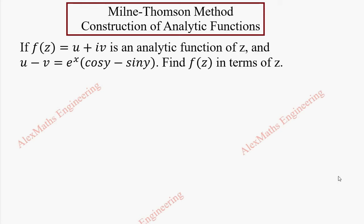Hi students, this is Alex here. In this problem we have given: if f of z is u plus i·v, which is an analytic function of z, and u minus v equals e^x times (cos y minus sin y). We have to find f of z in terms of z. Let's take the given u minus v and partially differentiate with respect to x.